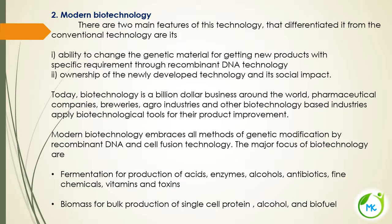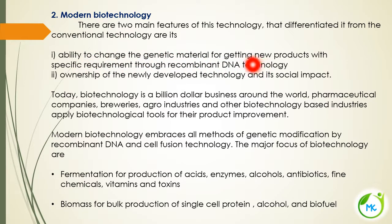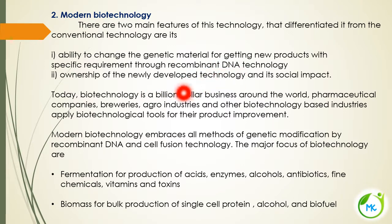Modern biotechnology has two main features, and based on these two features it gets differentiated from conventional biotechnology. First is the ability to change the genetic material. In conventional technology, we use the entire organism — whether bacteria or yeast — as such. But in modern biotechnology, we alter the genetic material according to requirement by recombinant DNA technology, along with ownership of the newly developed technology and its social impact.